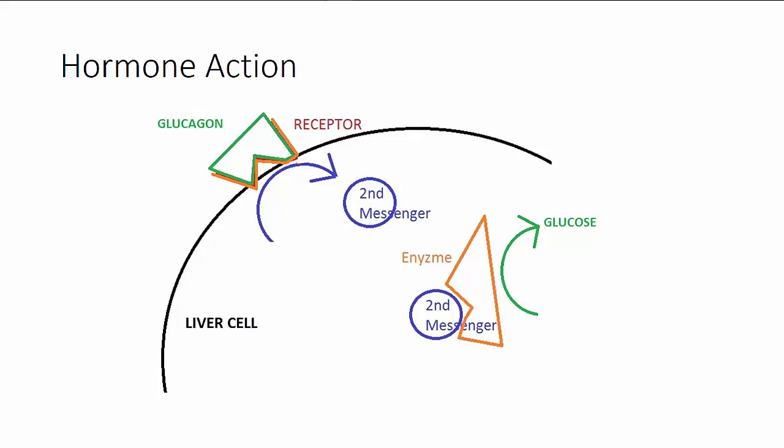Once the glucose levels rise to normal, further secretion of glucose is suppressed. We call that process negative feedback. Let's see how that works.